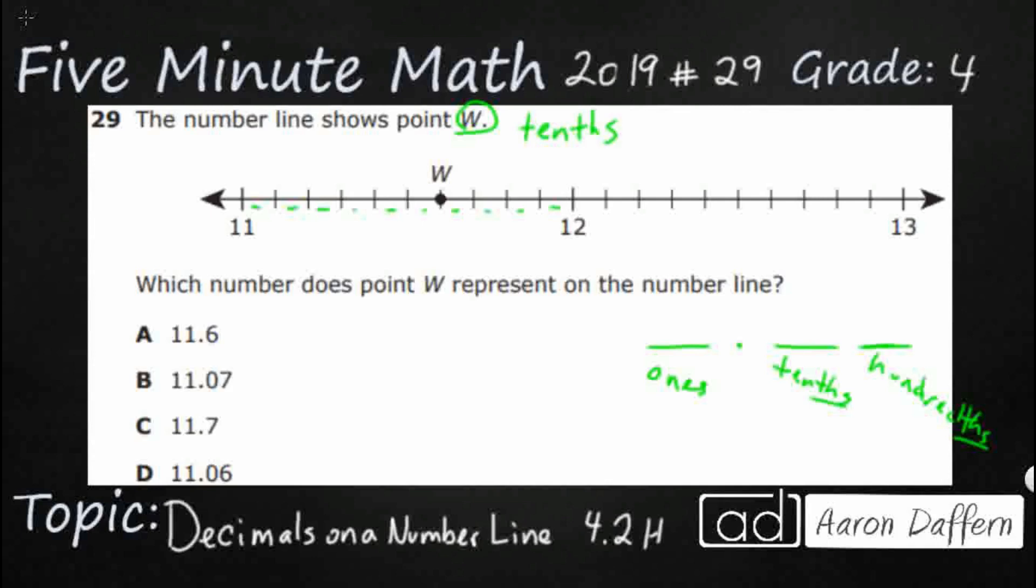So our W here is going to sit between eleven and twelve and we are going to have to count by tenths. And so what we could do is we could just kind of plot some of our points here. We could see which of these kind of sit in the correct spot. So let's look at eleven point six first. That's A. And so what we're going to do is we're going to just count tick marks. And since we know there are ten spots in between eleven and twelve, we can just start counting them as decimals.